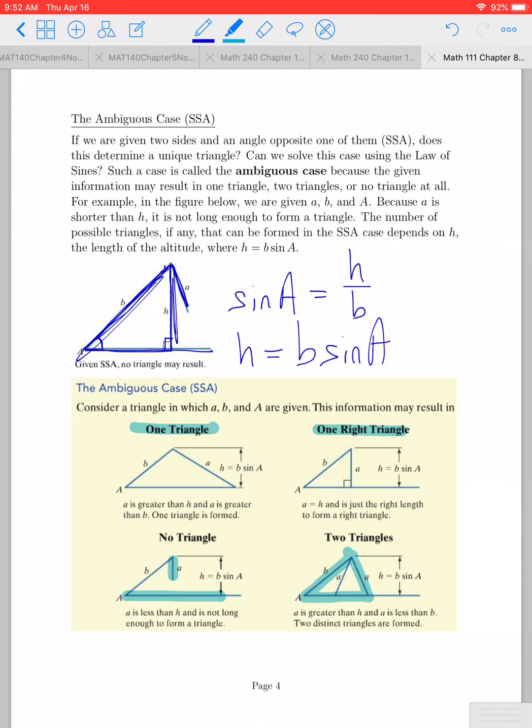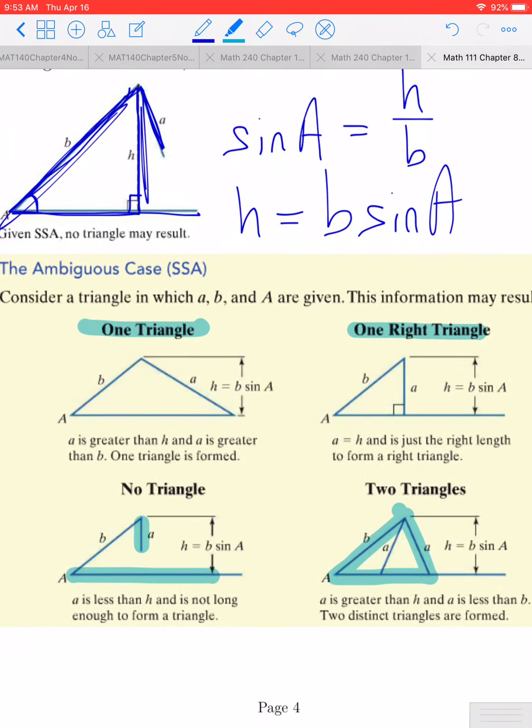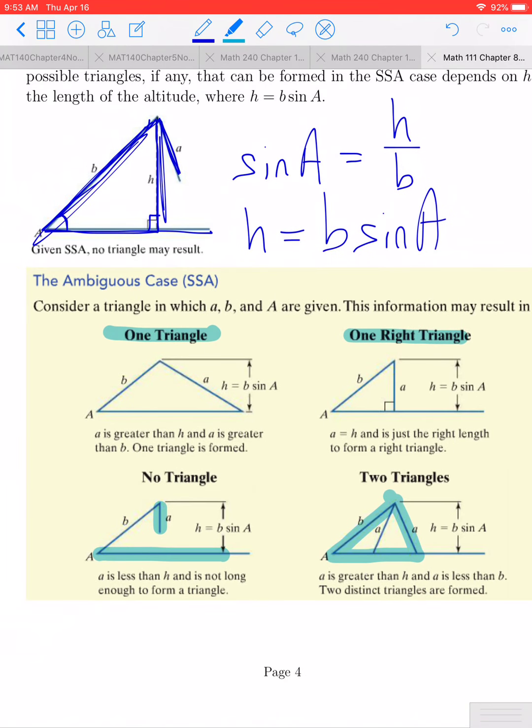So the biggest takeaway and what's going to be important to us as we look through the next several examples is if the given starting information is of the form side-side and the non-included angle, we have to be very careful. We should always begin by calculating this value H, seeing how H compares to A, and then going from there to C, and also how A compares to B as well, and then seeing whether or not we get one solution, no solution, or perhaps two solutions to this type of problem.